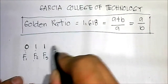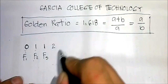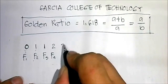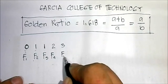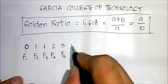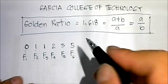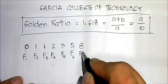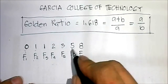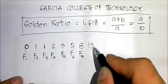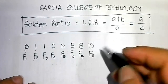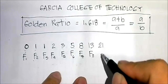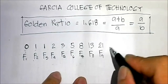Continuing the sequence: 1 plus 1 equals 2 (Fibonacci 4). Then 1 plus 2 equals 3 (Fibonacci 5). Then 2 plus 3 equals 5. Then 3 plus 5 equals 8 (Fibonacci 7). Then 5 plus 8 equals 13 (Fibonacci 8). Then 13 plus 8 equals 21, which is Fibonacci 9, and so on.